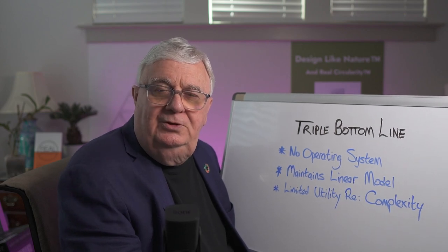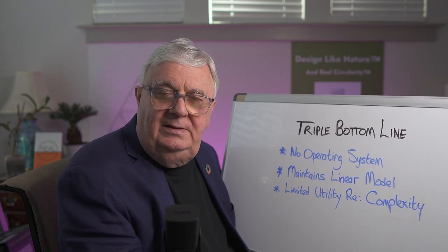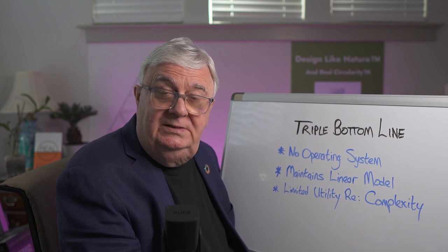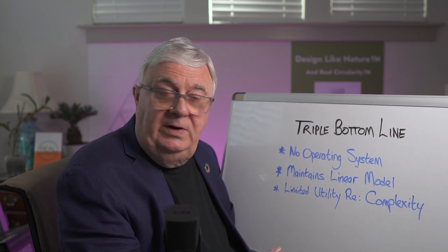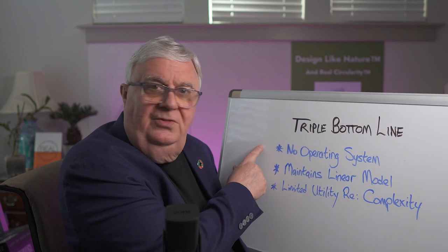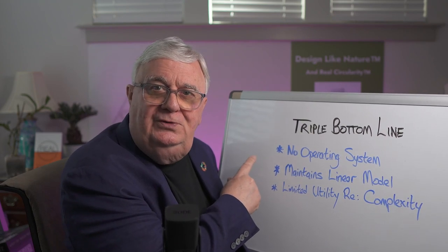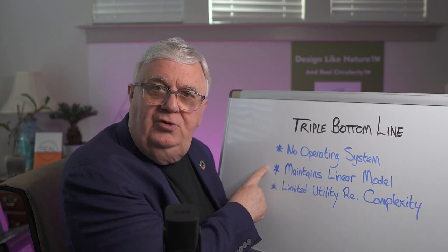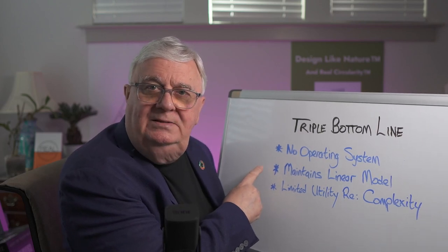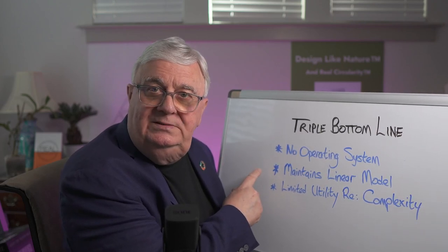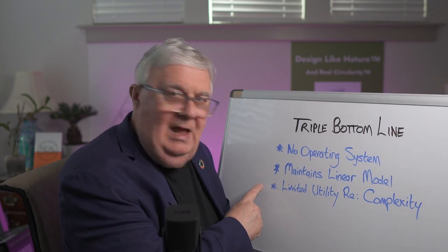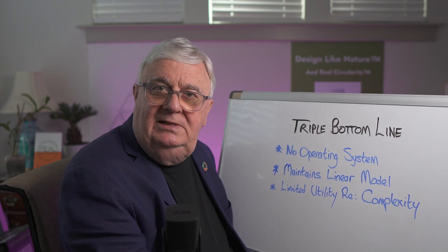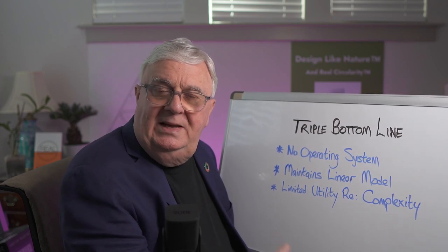In my last video, I talked about the triple bottom line, some of its strengths, but also some of its weaknesses. Among those main weaknesses are the following: there's no operating system for you to follow, there's no flow, the triple bottom line maintains the existing linear business model, and we showed in the last video how there is a limited utility in the model to deal with complexity.